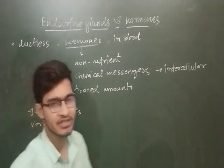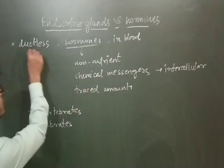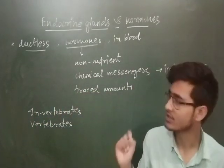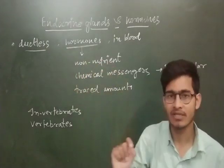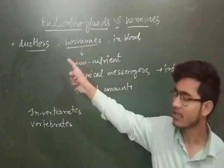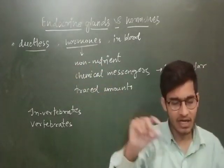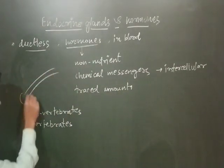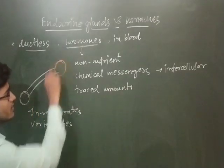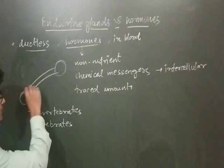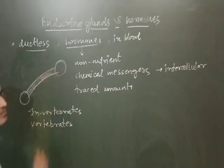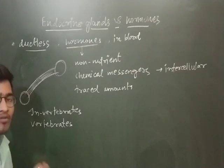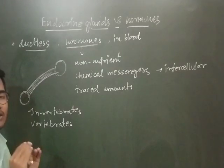Today we will talk about the basic definition. Endocrine glands are ductless in nature. Ducts are tube-like structures which help in the transfer of material from one particular organ or tissue to another place. But in the case of the endocrine system, or the hormonal system, it does not require ducts at all.